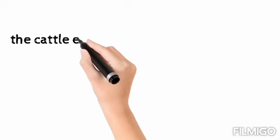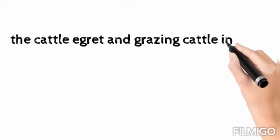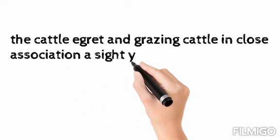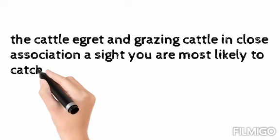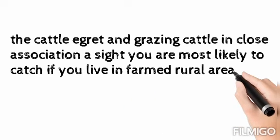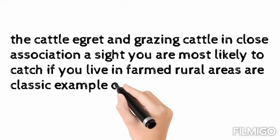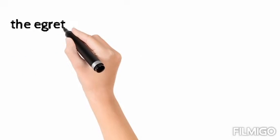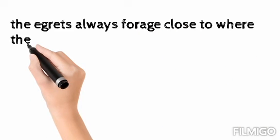The second example is the cattle egret and grazing cattle in close association — a sight you are most likely to see if you live in rural farm areas. You may have seen a cow with a bagula, which is the cattle egret, also running alongside wherever the cow goes.